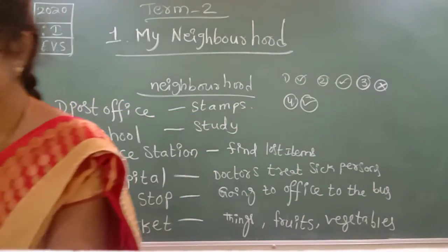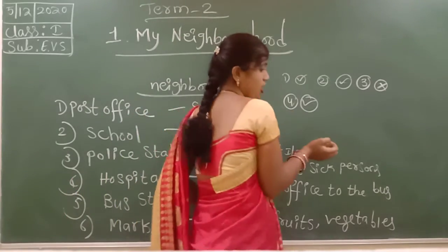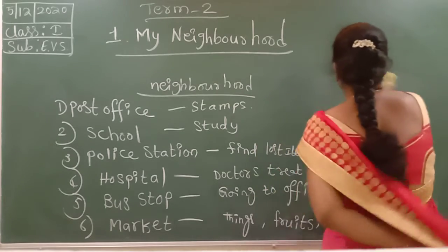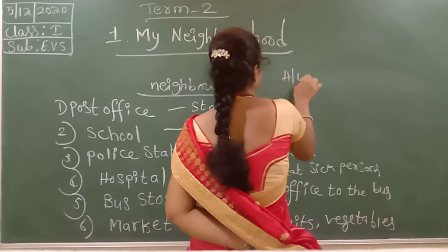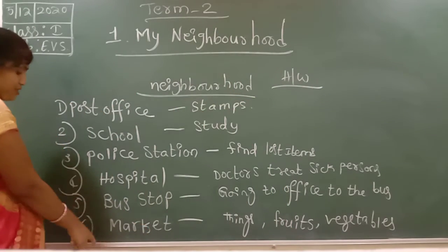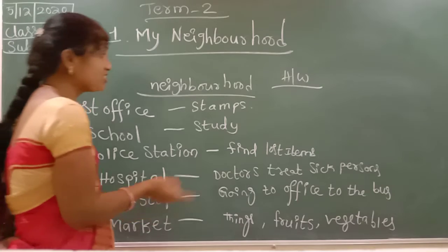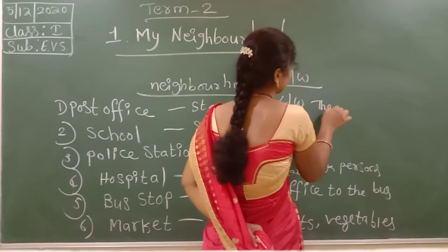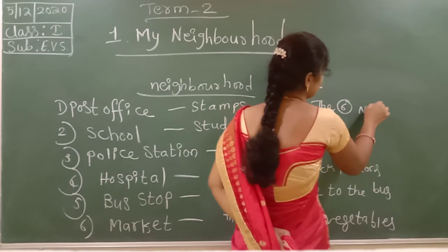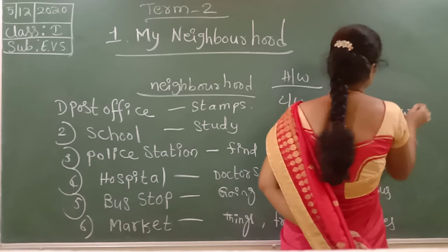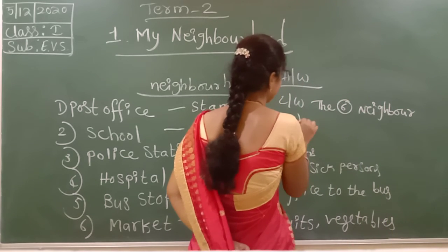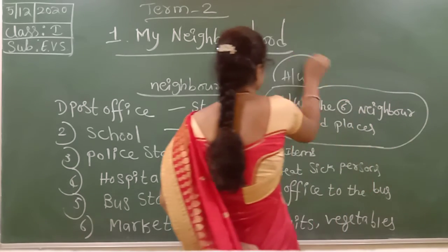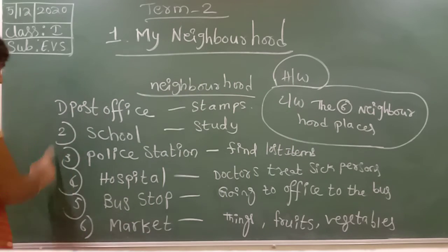Tomorrow we will write the hard words. Just you have to read the lesson — that's your homework. Just you have to learn the names and spellings of the six neighborhood places. Learn and write the six neighborhood places.